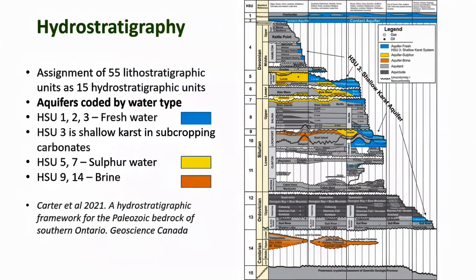Fifteen hydrostratigraphic units have been identified as illustrated on this chart. HSU names are listed in the left column. The erosional profile of the bedrock formations is shown along the right. Seven of the hydrostratigraphic units are classified as aquifers; the remainder are aquitards or aquicludes. Colors for the aquifers are as in the previous slides.